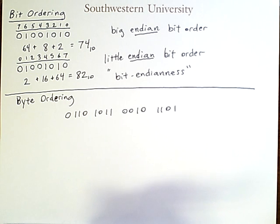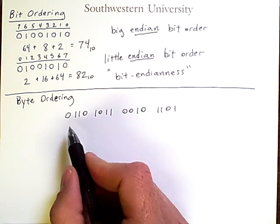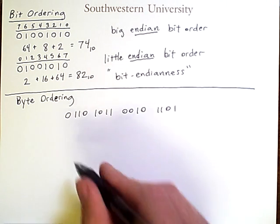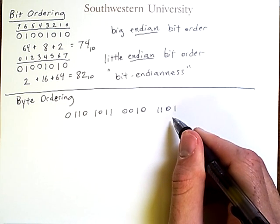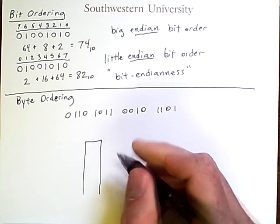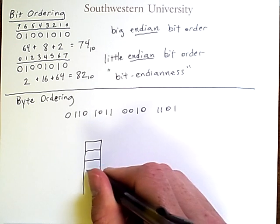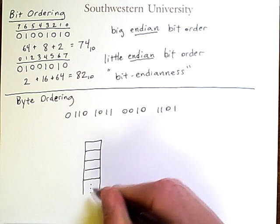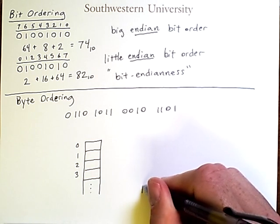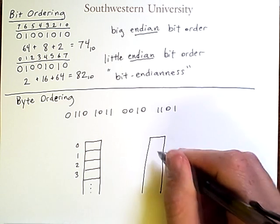So in many computers, there are addressable units that are larger than a single bit. It is very rare to be able to refer to a single bit. We refer instead to a byte or sometimes other units. So that means if we store this information in memory, we would have to fit it somehow into what is essentially a big linear array. At least we can think of it that way.